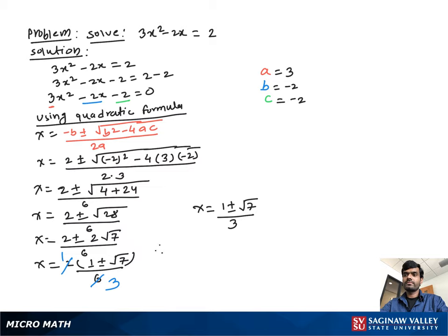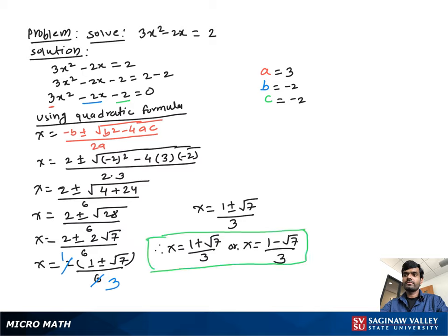We can separate it into two parts: x equal to 1 plus square root 7 over 3, or x equal to 1 minus square root 7 over 3. And this is our final answer.